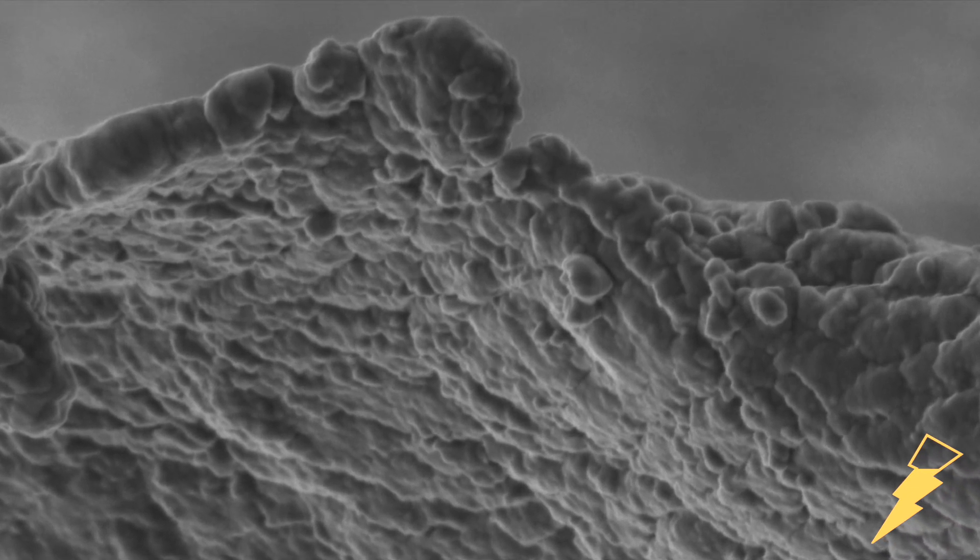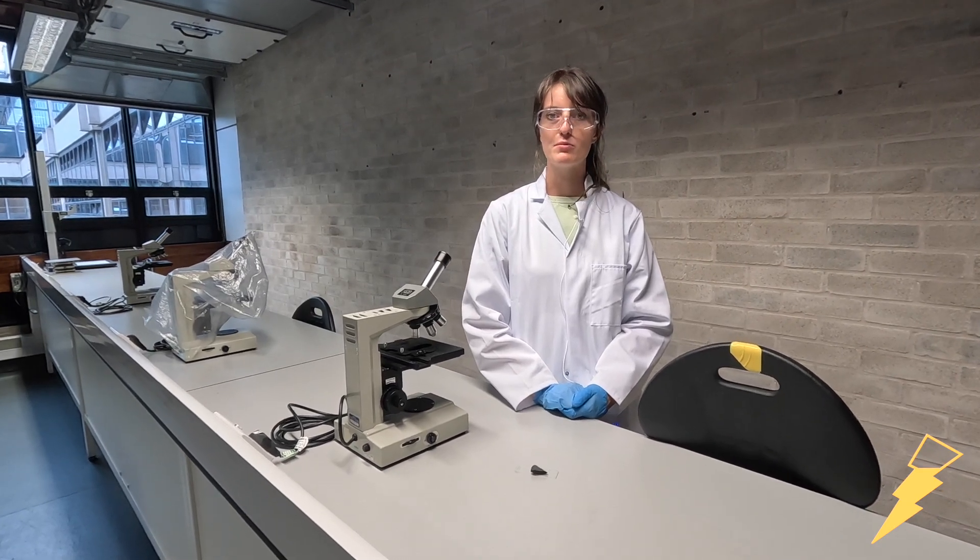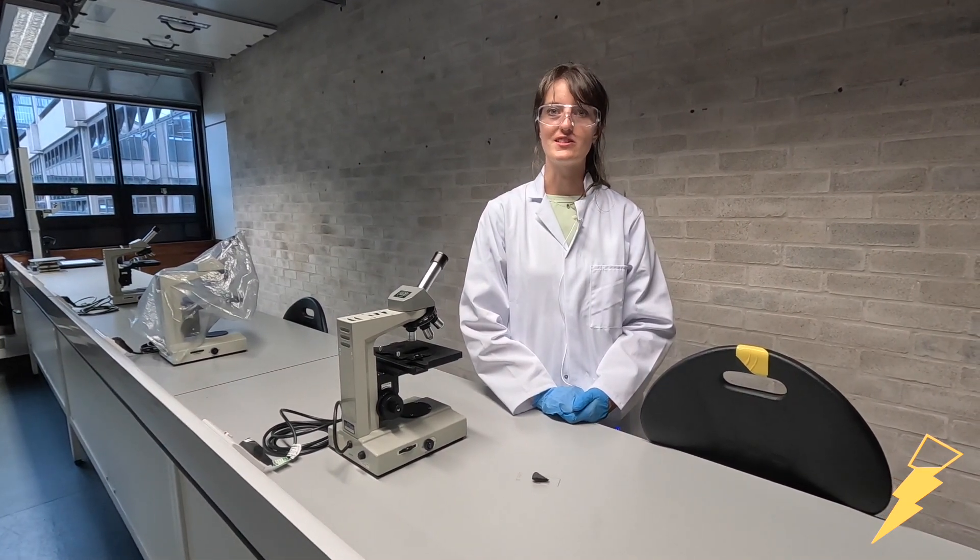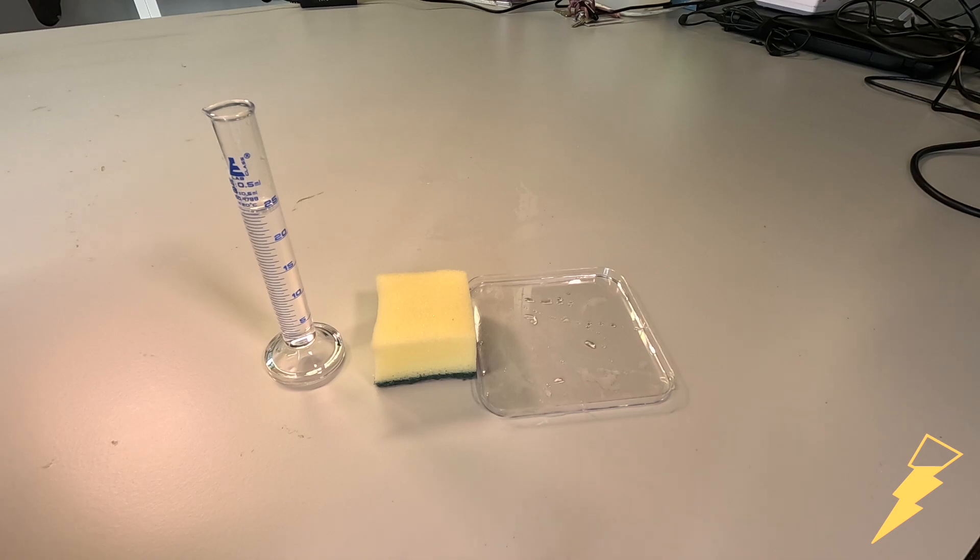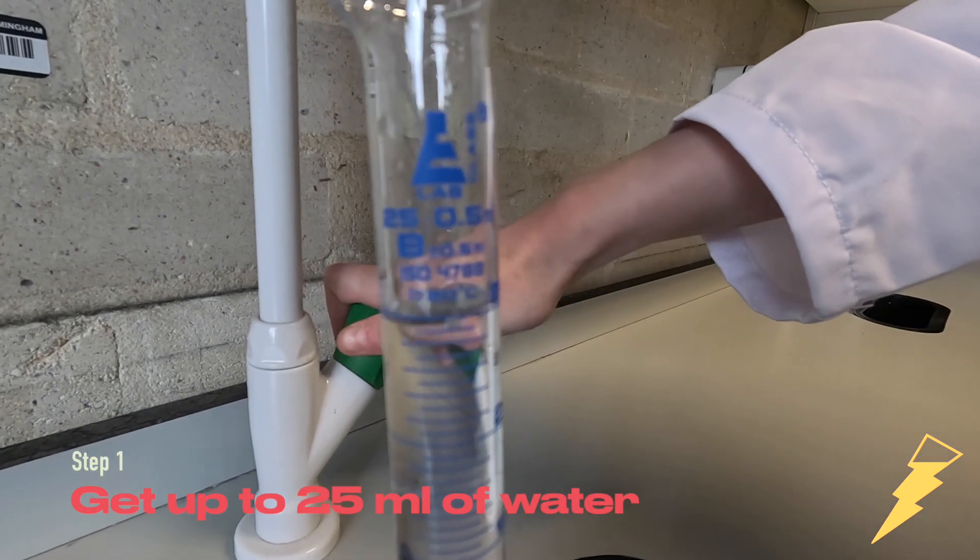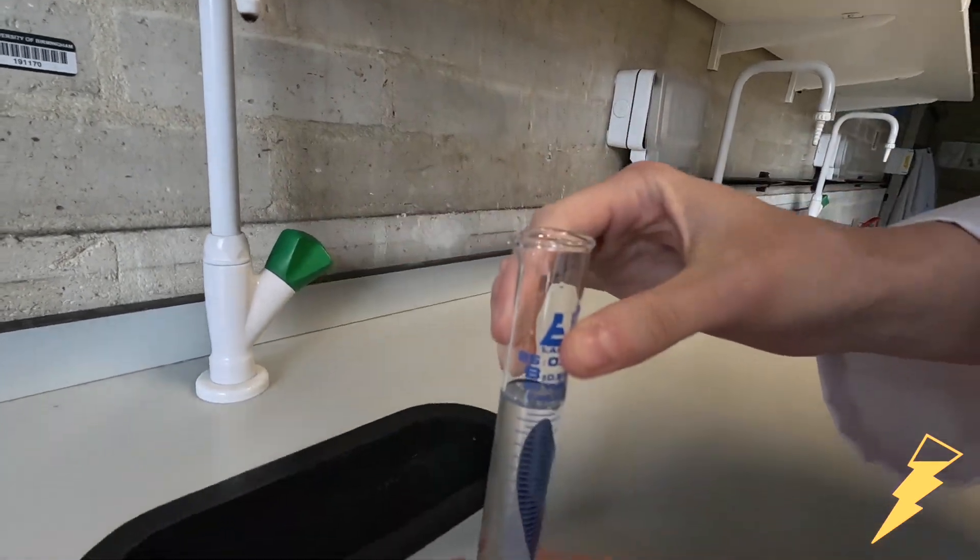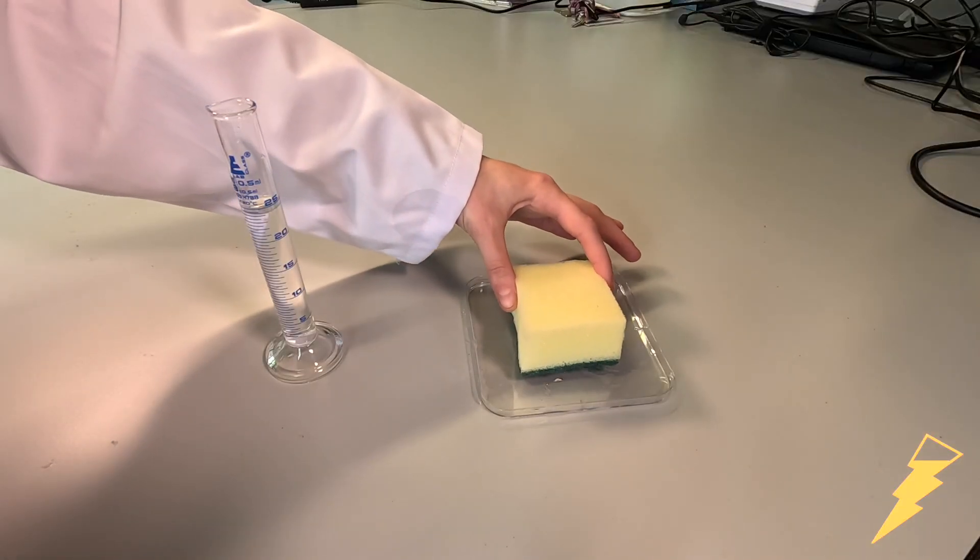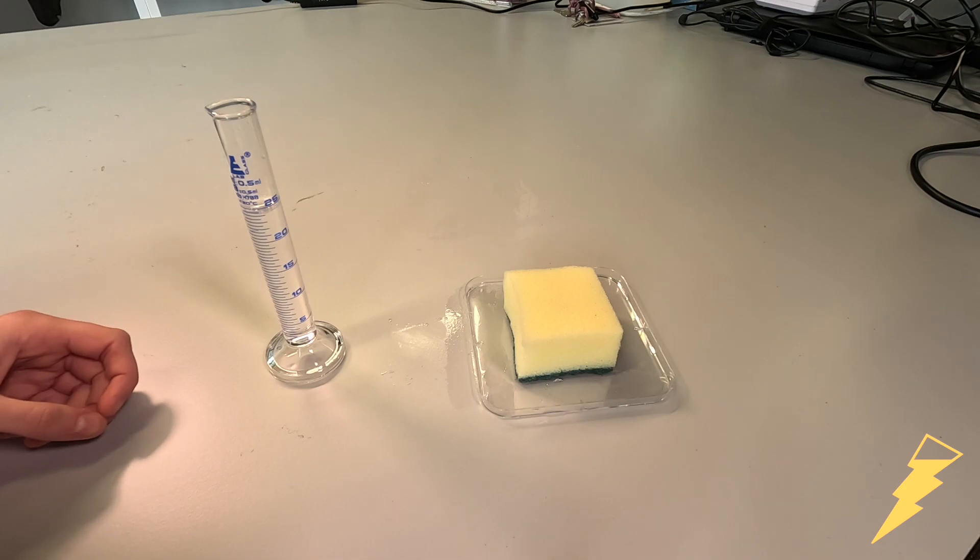So in our next activity we're going to be looking at how much water we can absorb with a sponge. In your box you will be getting a square petri dish, a sponge, and a measuring cylinder to measure up to 25 ml of water because in a moment we're going to be pouring it onto our sponge and seeing how much the sponge will absorb.